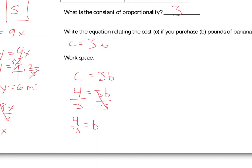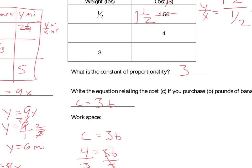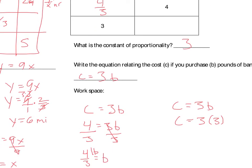The last situation is finding what happens when I buy three pounds of bananas. Using the equation C equals three times B, and three pounds of bananas goes in for B: three times three. That tells me my cost is going to be nine dollars.